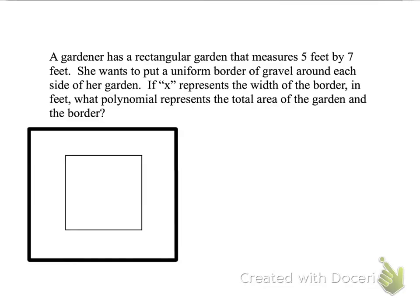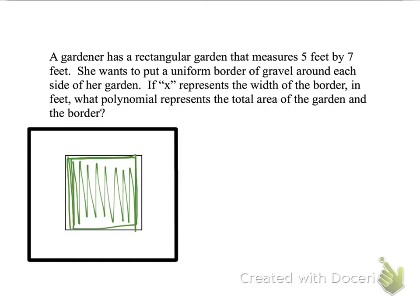Okay, so we have a little diagram down here. The smaller rectangle on the inside, we're going to let that be the garden. So we'll color it green to represent the garden. This is the five feet by seven feet garden right here. So we'll say this side is five feet and that side is seven feet.